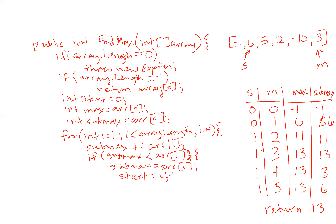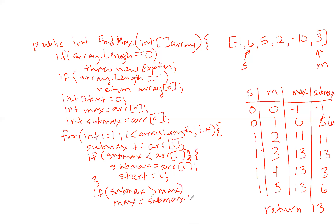Then if sub max is greater than max, we know we have a new maximum, so we make max equal to sub max. That pretty much does it — it will iterate throughout the array. We close the for loop and return max at the end of the function. Let's test it out.